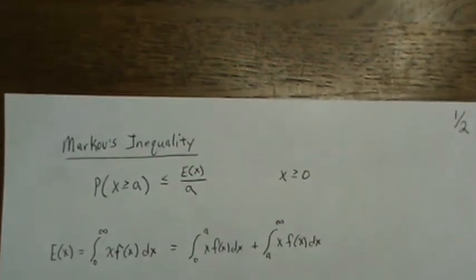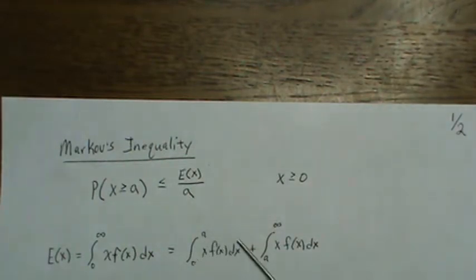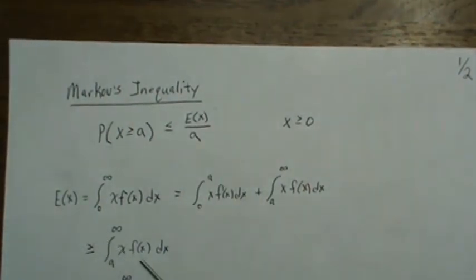A quick proof of that is we go by the definition of expected value of X, which is X times the density from 0 to infinity because it's positive. And then we break it at A, we separate it. Because X is positive and the density is positive and we're integrating over a positive value, this is a positive value. So if we get rid of it, then this is greater than or equal to that, which is this piece here.